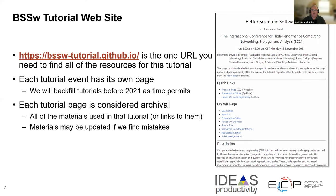The tutorial website at bssw-tutorial.github.io is the one canonical place where you can find all of our tutorial information. Each tutorial event has its own page, so you can go to the main page, find the page for this tutorial, and get all the information we're providing. You'll see the full agenda, a link to the slides, information about hands-on exercises, and a section called 'Resources from the Presentations' where we've taken all the links from these slides and made them easily accessible. Once videos from this event are available, we'll link to those as well.